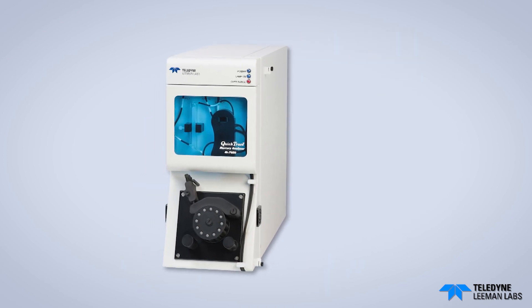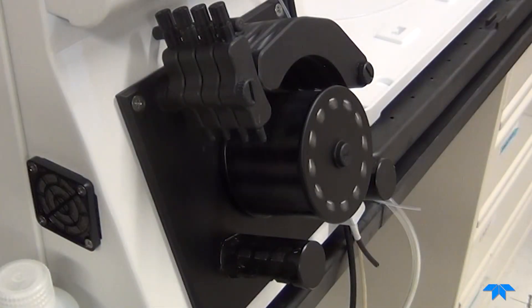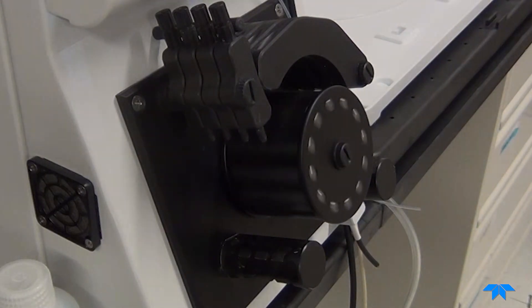We will use the QuickTrace M-7600 mercury analyzer with a standard size tubing harness. Before introducing liquid samples into your system, double check the following items.